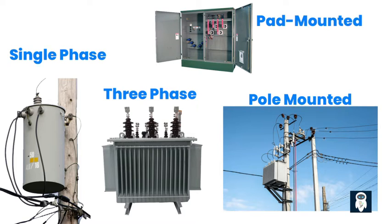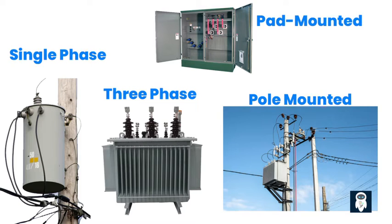Types of distribution transformer: Since distribution transformers are used for voltage regulation and load distribution, they come in several sizes rated by voltages and currents, and can be classified into four types based on their application. Single-phase: This distribution transformer is designed for single-phase power systems. The primary winding is connected to an incoming three-phase supply line through three separate terminals, with one secondary winding for each phase connected to the load through different terminals.